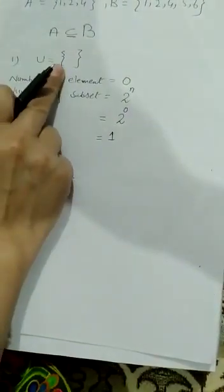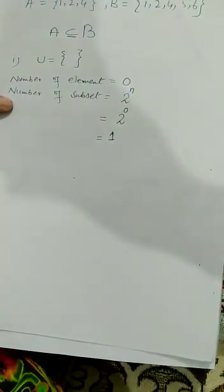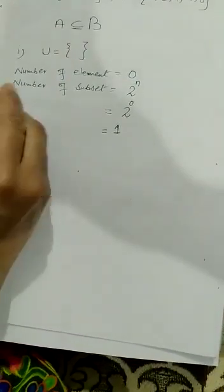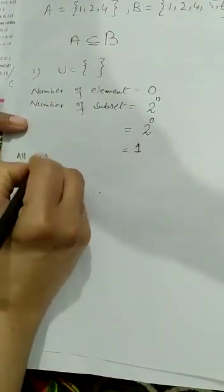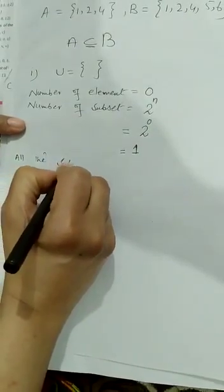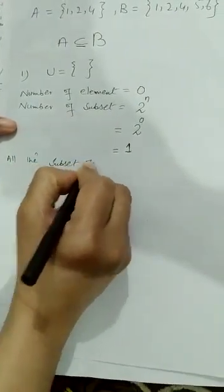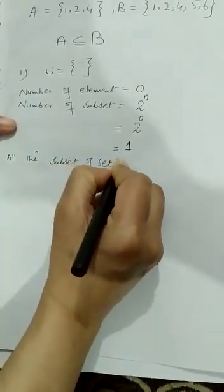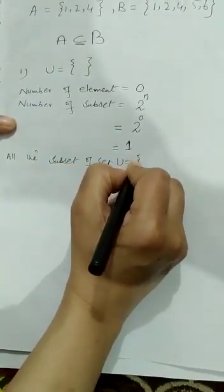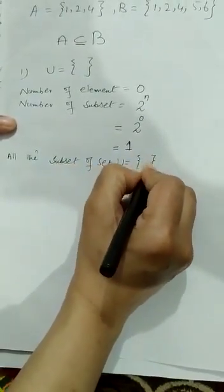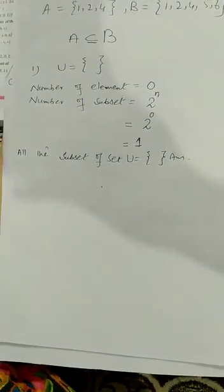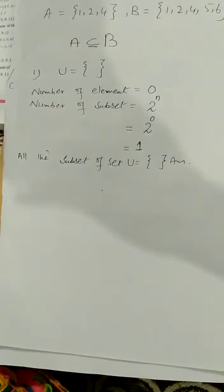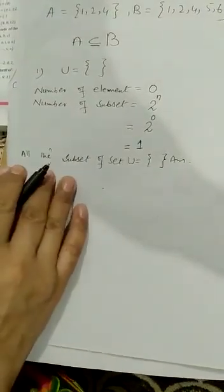For example, if U is equal to an empty set, the number of elements is 0. So number of subsets = 2 power 0, which is always equal to 1. It means an empty set has 1 subset. All the subsets of set U equal the empty set. Always remember: the first subset will always be empty.